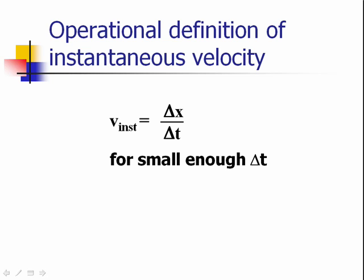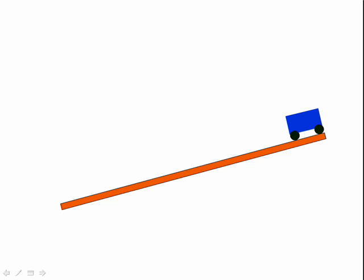Now, let's explore these two different types of velocity with an example. Suppose that I have a cart on an inclined ramp, and that this cart starts from rest, and then I release it, and it speeds up as it goes down the ramp.